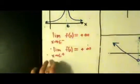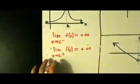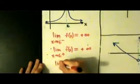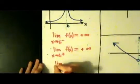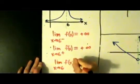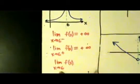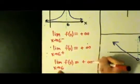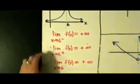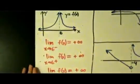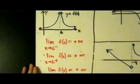Now notice, the left-hand limit and the right-hand limit both equal positive infinity here. So the limit as x approaches 6 of f of x — this is the two-sided limit, no minus sign, no plus sign — that also equals positive infinity, because both the left and the right-hand limit equal positive infinity. So that's one example.